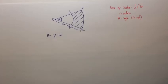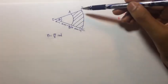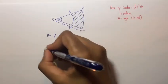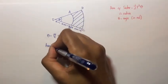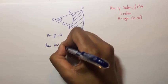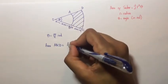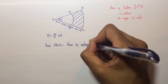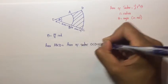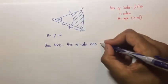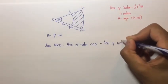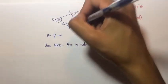In the diagram given, we are required to find the area of the shaded section ABCD. We know that the area ABCD is equal to the area of sector OCD minus the area of sector OAB.